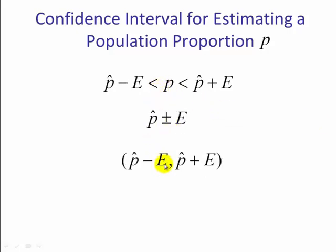And if we look at it, there's actually three ways we can write a confidence interval. We can say p-hat minus E is our lower bound, p-hat plus E is our upper bound. So we can write it as an inequality. We can write it as a point estimate plus or minus a margin of error. And we can write it in interval notation: lower bound, comma, upper bound.